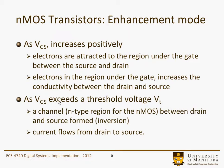As VGS exceeds the threshold voltage VT, a channel — now an N-type region for the NMOS — between the source and the drain is formed. At that point the material there is called an inversion layer. Basically it's as much N-type there as it would have been P-type in the bulk, and current can then flow from the drain to the source.